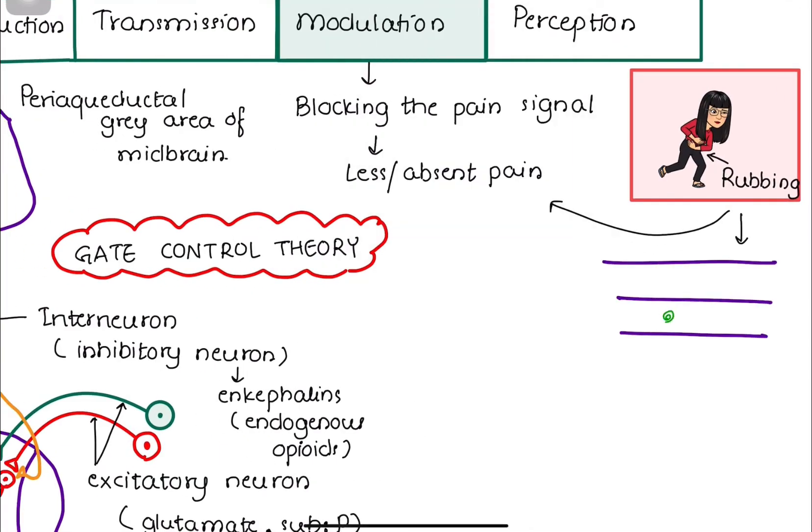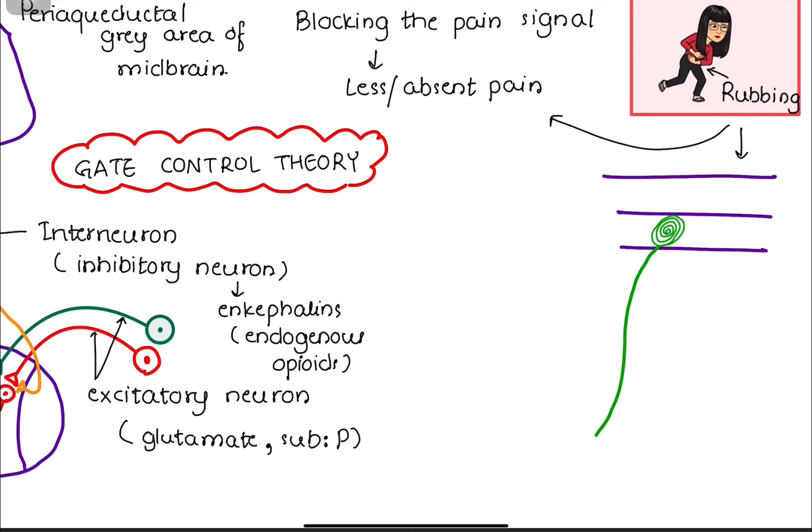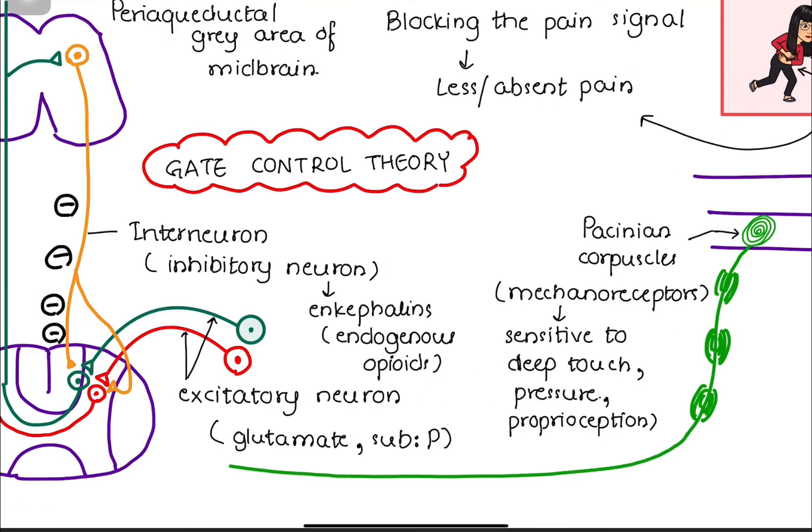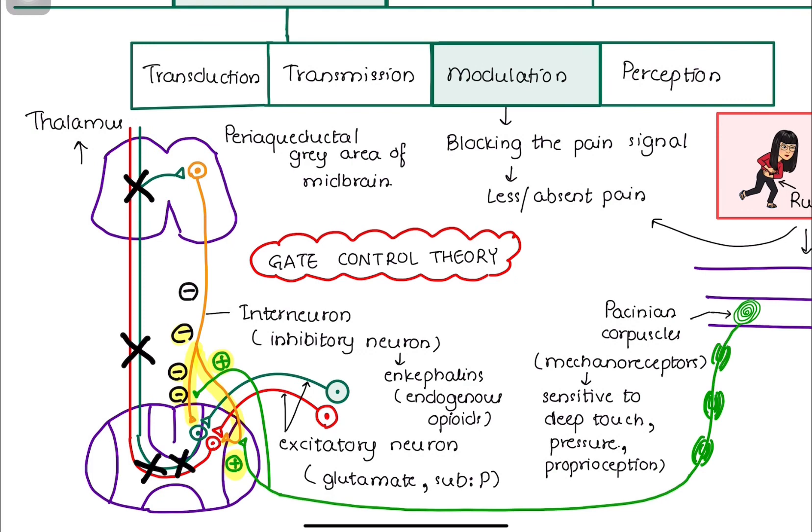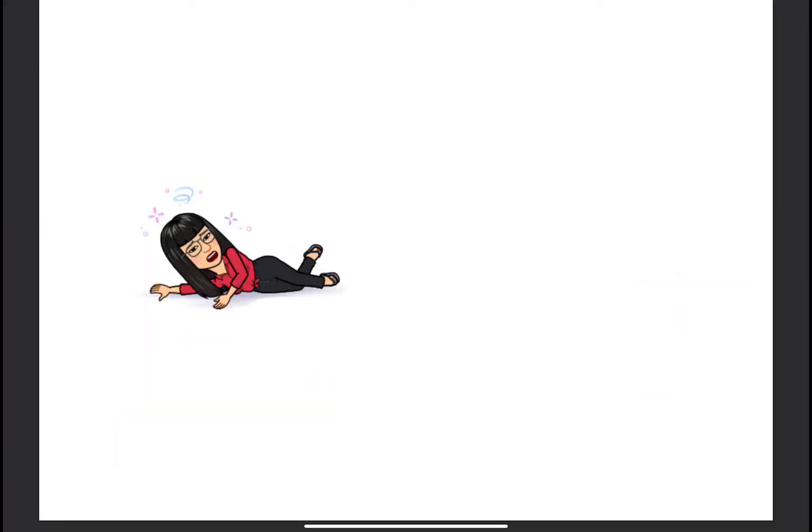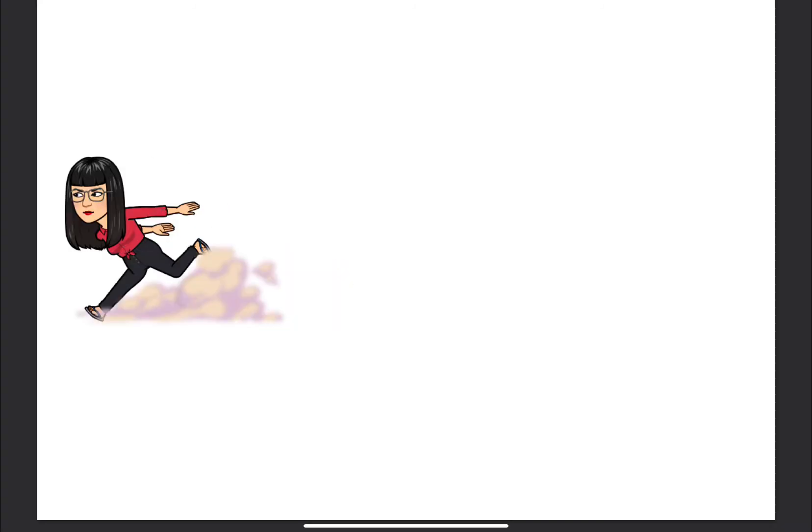Our skin has special types of cells known as Pacinian corpuscles. They are activated by non-painful stimulus such as deep touch or pressure. After rubbing the skin, the signals from Pacinian corpuscles are transmitted to the dorsal horn of the spinal cord where they activate the interneurons. The activation of interneurons causes inhibitory neurotransmitter release and thereby blocks the pain signal transmission to the brain. That's why, if we sprain our ankle while racing in a competition, we are still able to ignore the pain and keep running.